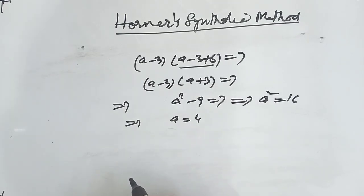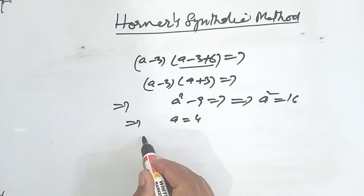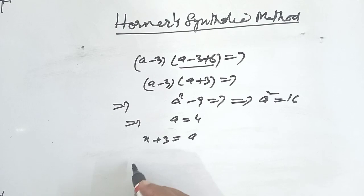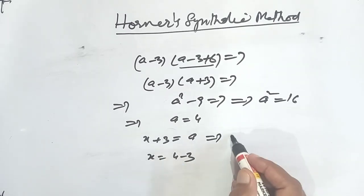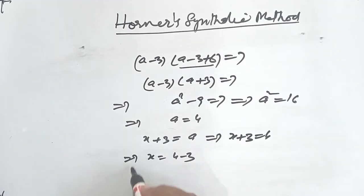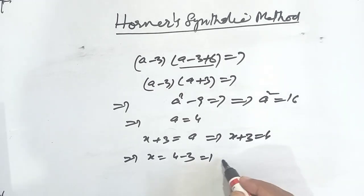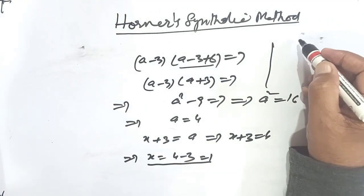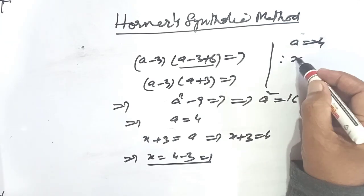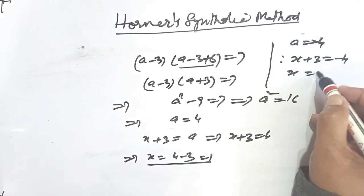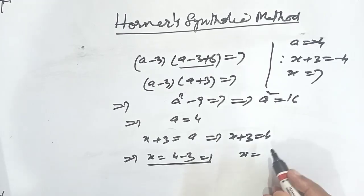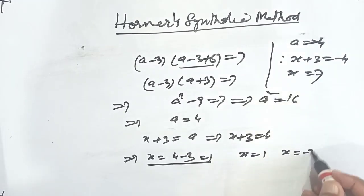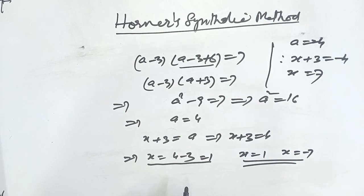In that period, Babylonians did not consider negative signs. Therefore, from x + 3 = a = 4, we get x = 4 - 3 = 1. For the other value, taking a = -4, x + 3 = -4 gives x = -7. So the two values of x are x = 1 and x = -7, found by the ancient method.